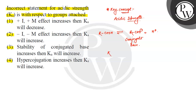Now, if we write Ka, we can write: concentration of RCOO⁻ into concentration of H⁺, divided by concentration of RCOOH. This is the Ka value. So, Ka is directly proportional to H⁺ concentration.